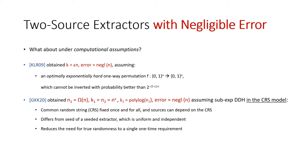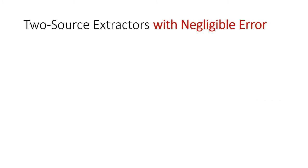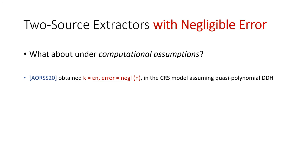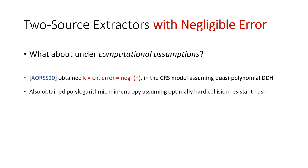This differs from the setting of seeded extractors, where crucially the source and seed must be independent of each other. What this model does is reduce the need for true randomness to a single one-time requirement. In that work, the amount of entropy we could work with was sublinear for the first source and polylogarithmic for the second one. Subsequently, Agarwal et al. obtained sublinear entropy assuming quasi-polynomial DDH, and extractors for polylogarithmic min-entropy assuming optimally hard collision-resistant hashing — essentially exponential hardness assumptions.